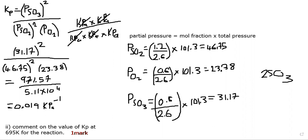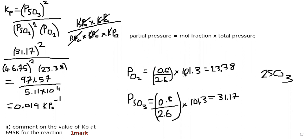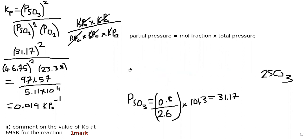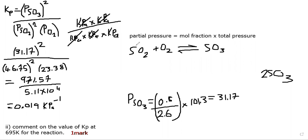The final part of the question asks us to comment on the value of Kp at 695 Kelvin. The original calculation was done at a lower temperature, so this is asking what happens when temperature is increased. As established earlier, increasing temperature shifts equilibrium to the endothermic side — the left — which favors the reactants. When equilibrium shifts to the left, more reactants are produced, so the concentration of reactants increases and the concentration of products decreases.